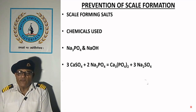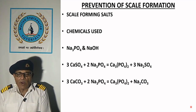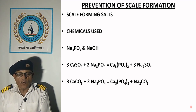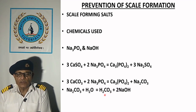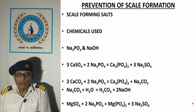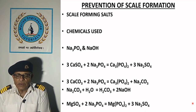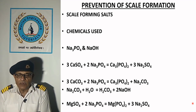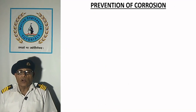Sodium carbonate formed in the reaction provides alkalinity to the boiler water as it is hydrolyzed to form a weak acid — carbonic acid — and a strong base, sodium hydroxide, as shown in the reaction. Magnesium phosphate formed in the reaction is also precipitated, which can be removed by blowdown.